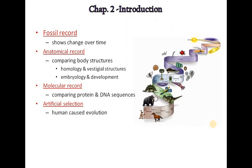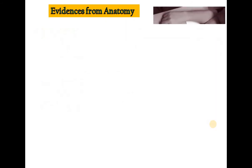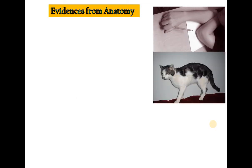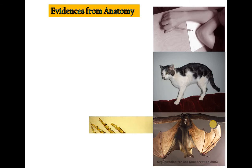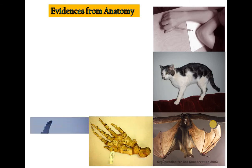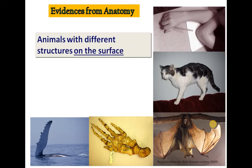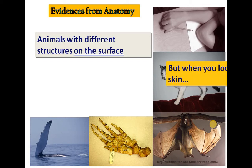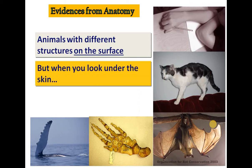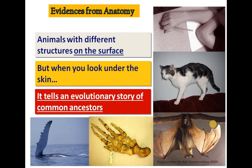So let us begin with the evidences. First, we will learn evidences from anatomy. Anatomy is the branch of science which deals with the study of internal structure. All these animals have different structures on the surface — morphologically they are different and do not look similar. But when you look under the skin, it tells an evolutionary story of common ancestors.